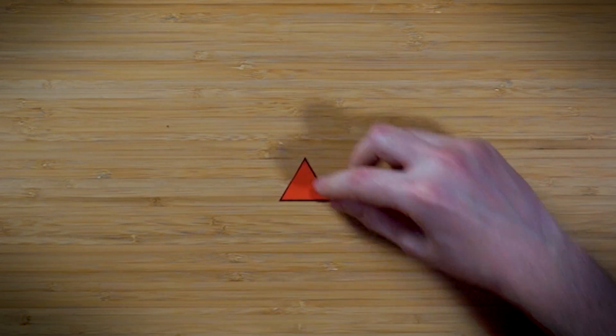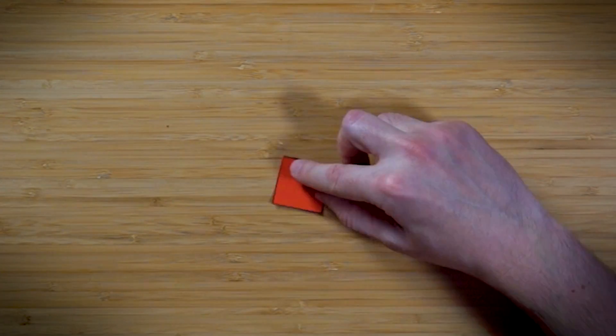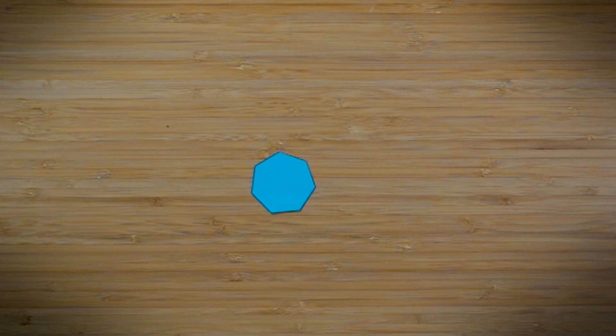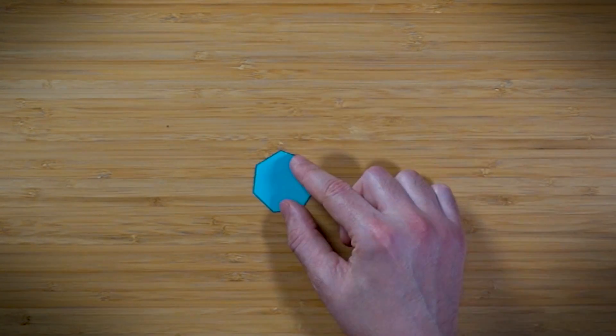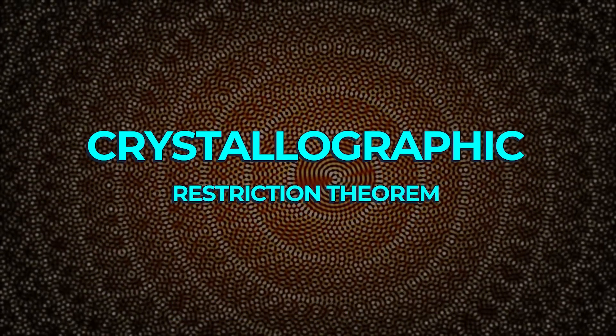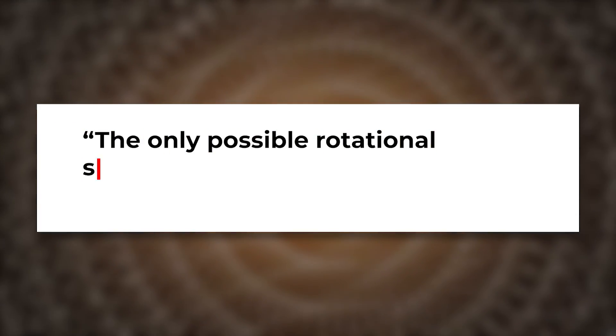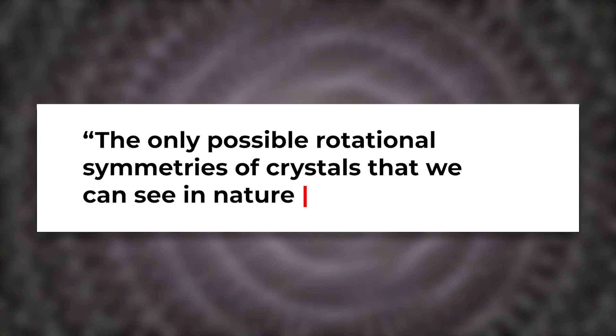Now it's worth going through this so we can look at how we might change these shapes, rotate them, and how they're affected under symmetry. What we're interested in is how many times an object can be rotated by less than 360 degrees and appear the same as its starting position. For a triangle, we can rotate it three times — threefold symmetry. For a square, fourfold. For a hexagon, sixfold. These results give us the crystallographic restriction theorem, which states that the only possible rotational symmetries of crystals in nature are twofold, threefold, fourfold, or sixfold. We'll return to this later and show that this result is anything but straightforward.